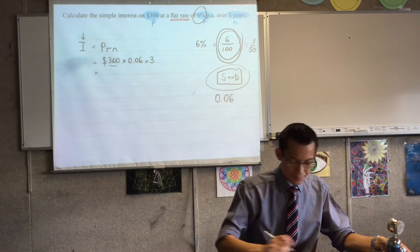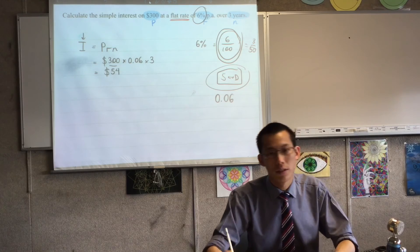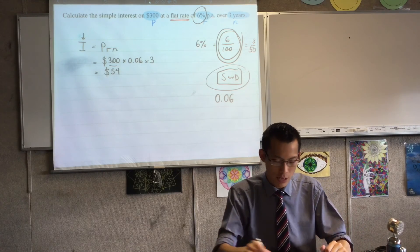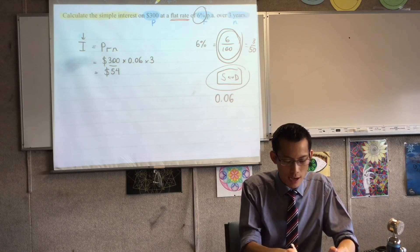And I'm going to go ahead and do that now: 300 by 0.06 by 3. That's giving me $54, and that's it. That's all you're asked to do: calculate the simple interest.